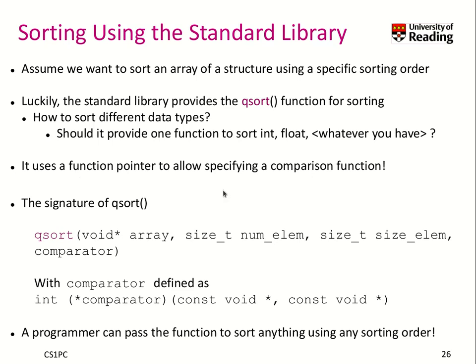Function pointers allow us to specify a comparison function that we can input to the sorting, and therefore we would just need one qsort function and we can sort anything we like. Isn't that amazing?